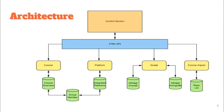Now we look at the architecture. There are mainly two components: the control section and the IITBX API. The control section interacts with the user on the front end, while the IITBX API consists of various APIs with their local databases, providing back-end services. The course and platform API databases are interconnected using the group member database. The grade API has two types of databases: MySQL and MongoDB, and the course import has a storage database.